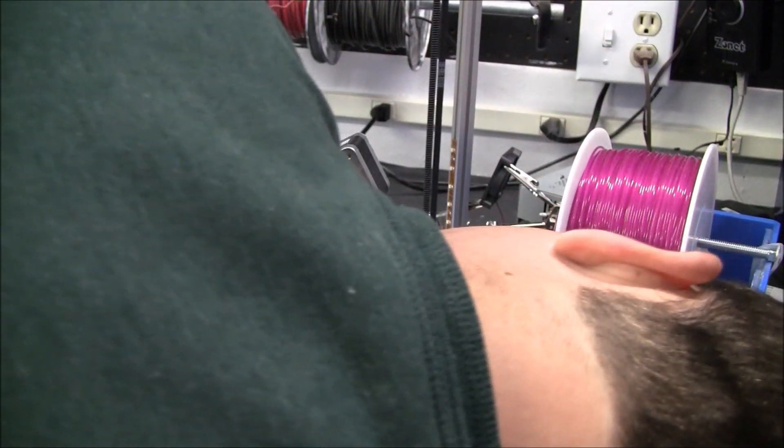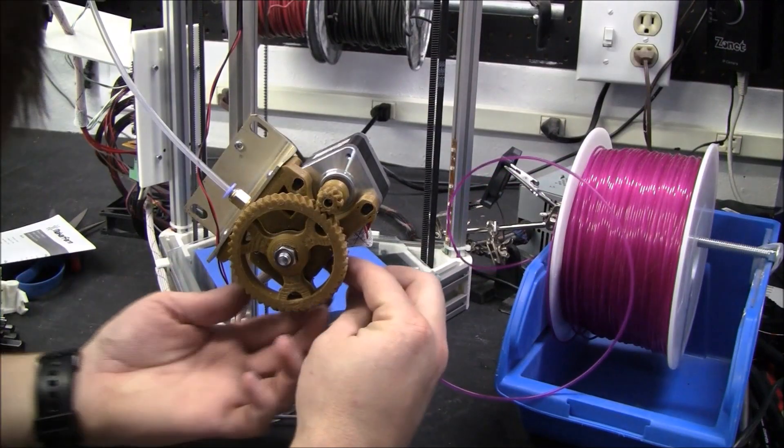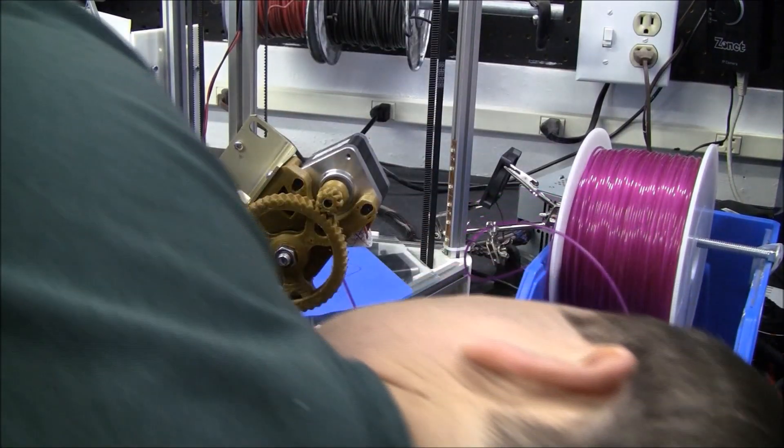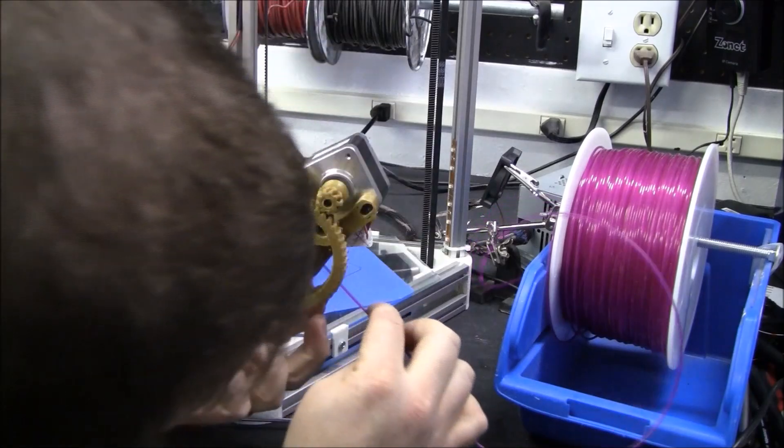So yeah, even though this extruder is set up for 3mm, I'm thinking that 1.75 will work just fine on it.